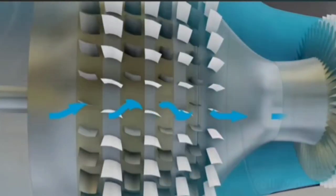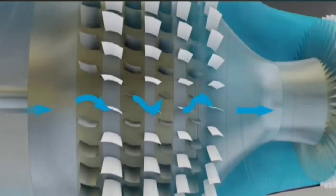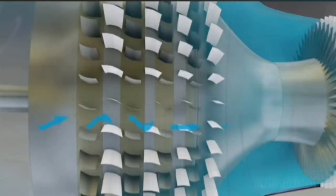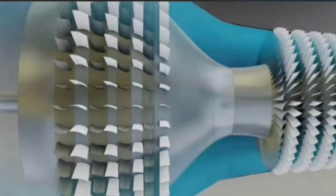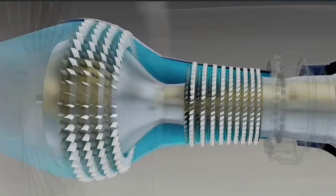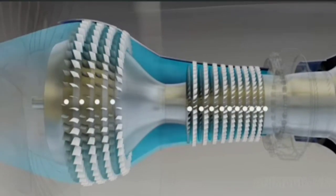Rotor blades swirl the air as they force it through the compressor. Stator vanes slow this swirling momentum in exchange for increased air pressure. The compressor has four low-pressure and ten high-pressure stages.